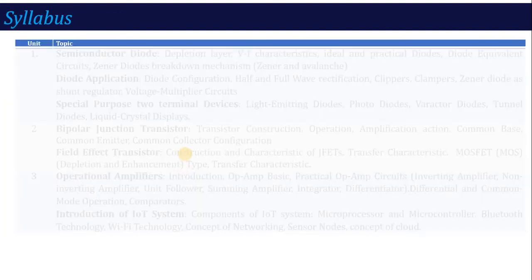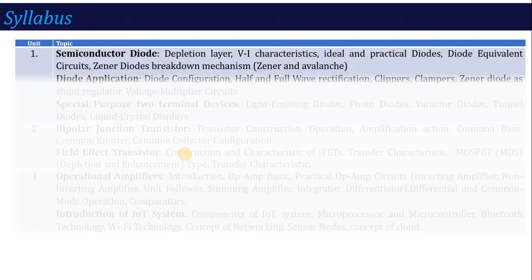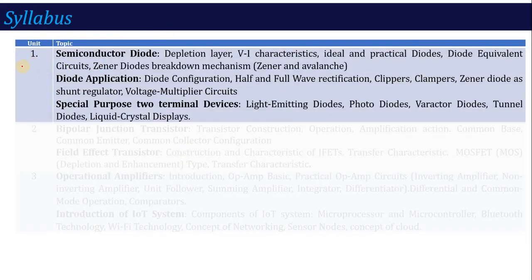This is basically a full credit subject which consists of 5 units. If we talk about the first unit, you will study what is semiconductor diode. We will study about PN junction diode, the depletion layer — a very important concept. We will study the voltage-current relation, that is called VI characteristic. Then, what do you mean by ideal and practical diode — how the ideal diode works as a switch.